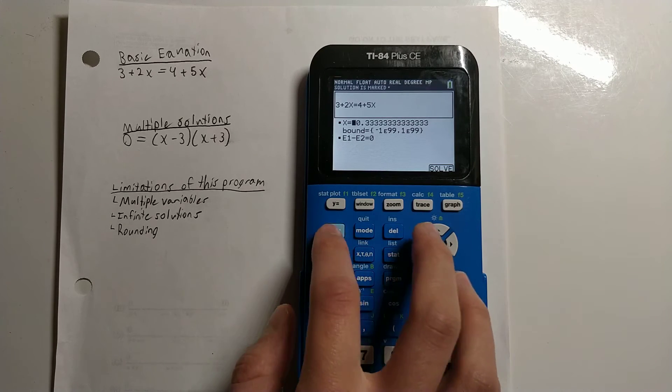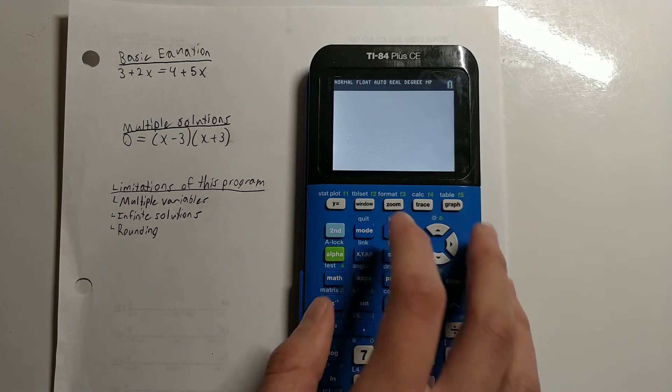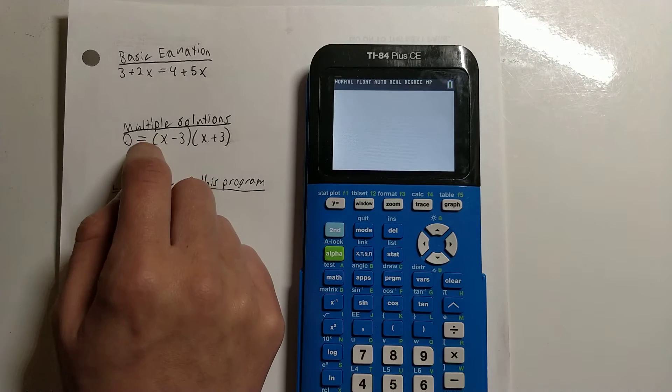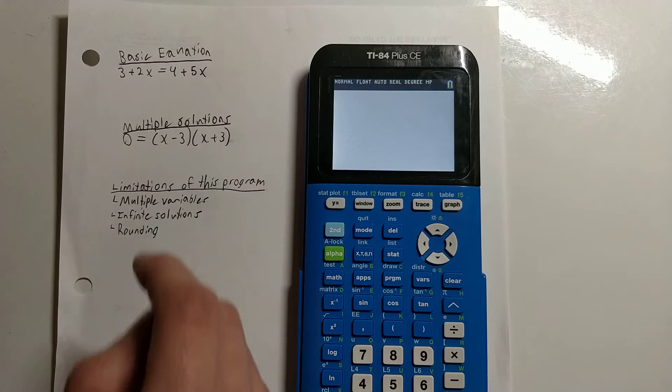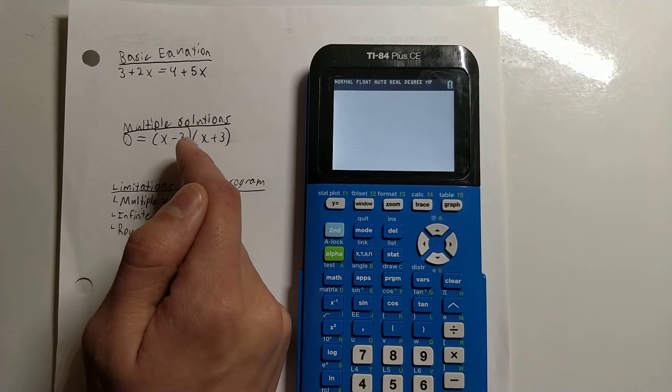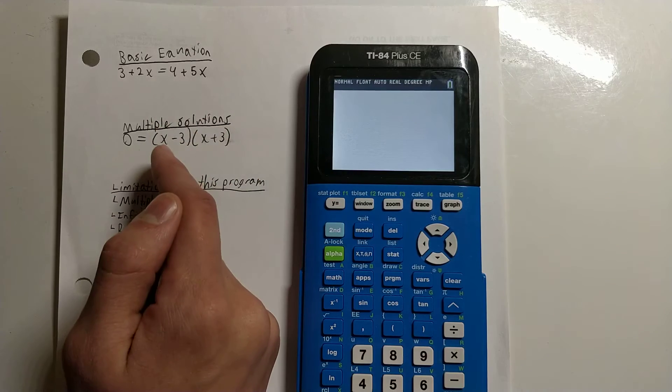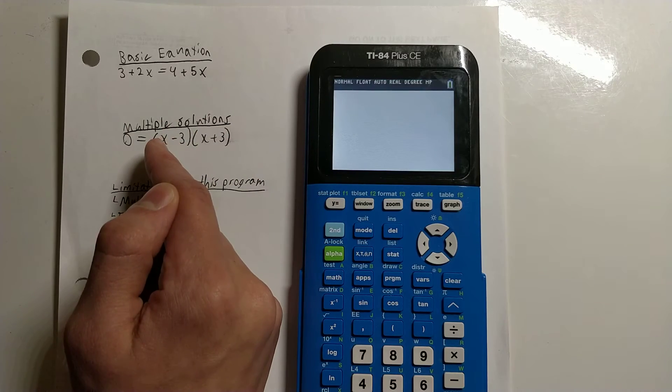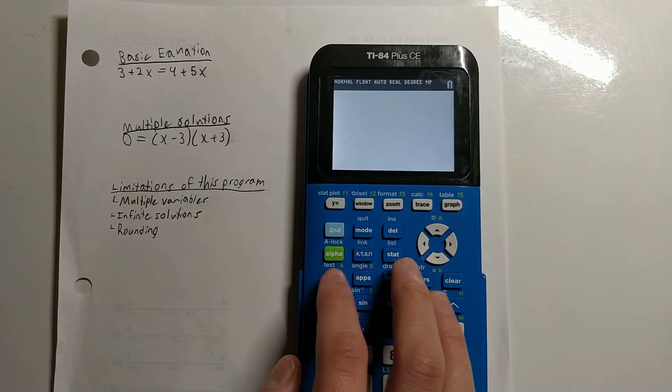To get out of this, we can do Second and then Mode, which is Quit. Now let's go ahead and solve this equation with multiple solutions: 0=(x-3)(x+3). The solutions to this equation are x=3 and x=-3.